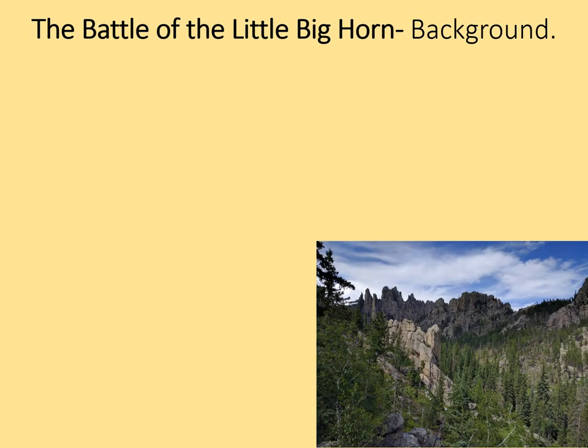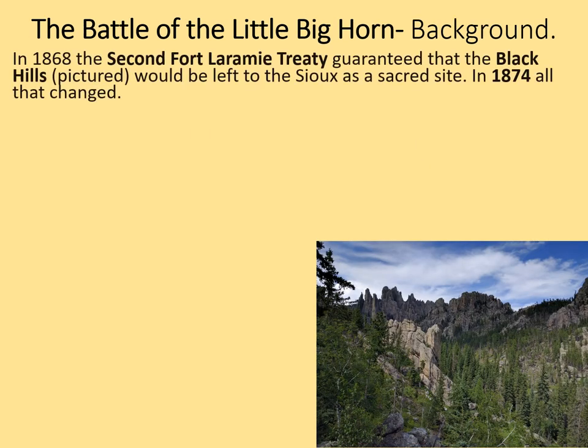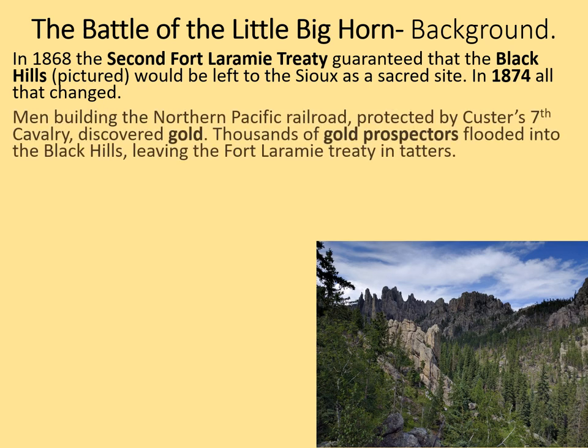Why did the battle occur? In the 1868 Second Fort Laramie Treaty, the Black Hills had been guaranteed to the Sioux as a sacred site in perpetuity — which means forever. However, in 1874, all of that changed. Men building the Northern Pacific Railroad, protected by Custer's 7th Cavalry, discovered gold. Thousands of gold prospectors flooded into the Black Hills, leaving the Fort Laramie Treaty in tatters.